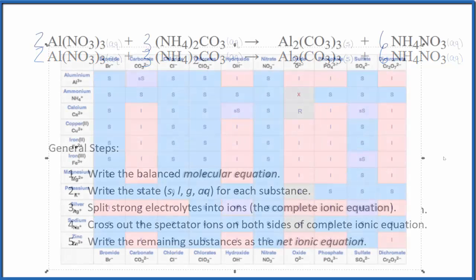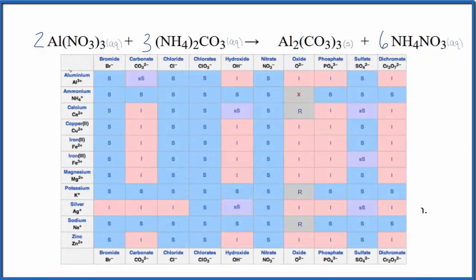Right here the "ss" means that aluminum carbonate is slightly soluble. A little bit of it will dissolve but not much, and for the purpose of net ionic equations we consider it to be insoluble, so we write s for solid.